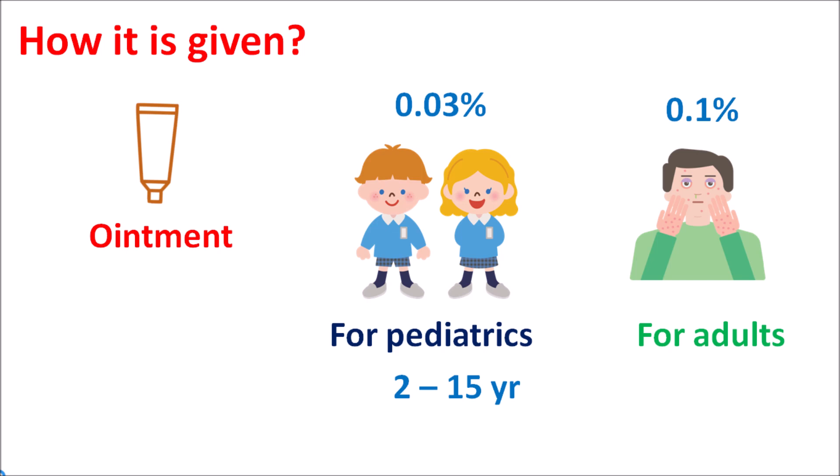Tacrolimus is an immunosuppressant that reduces T-cell activity and T-cell proliferation by inhibiting gene transcription and production of IL-2 and other immune mediators. Due to the decreased immune response it can reduce inflammatory reactions. This drug can be used both in pediatric and adult patients. In children with age less than 2 years this drug is not indicated. Because of immunosuppression, this drug can increase the risk of skin infections, skin burning, skin dryness, and itching. Patients should not be directly exposed to sunlight to reduce phototoxicity.